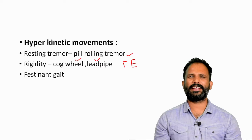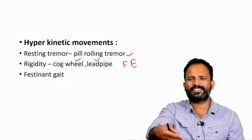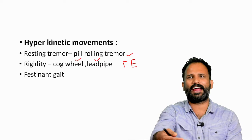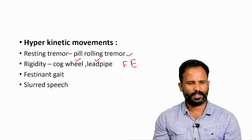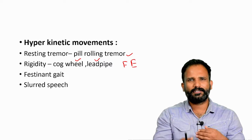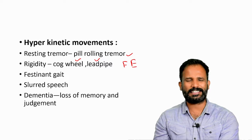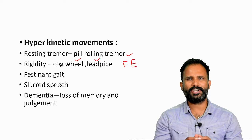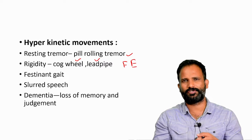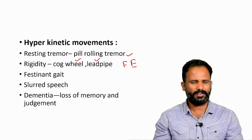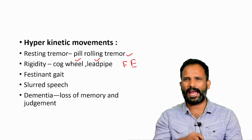Festinant gait involves walking with short steps, drooping forward as if chasing the center of gravity — this is called festinant gait. Slurred speech refers to slowed flow of speech. Dementia involves loss of memory and higher intellectual functions, including loss of judgment.